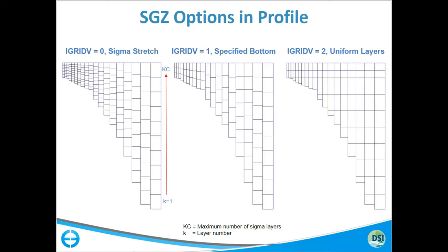Through that process we really sped up the simulation, and the results for stratified systems are basically as good as a Z grid model — very, very good at reproducing vertical structure in the system. So this is option one, where you actually specify the bottom.